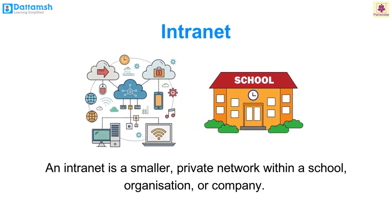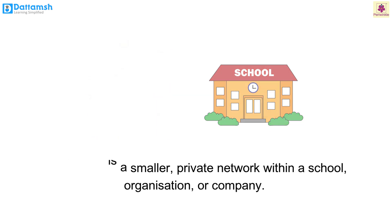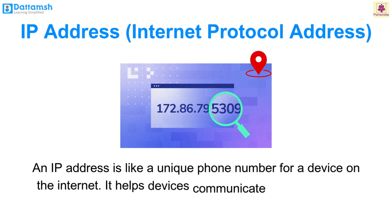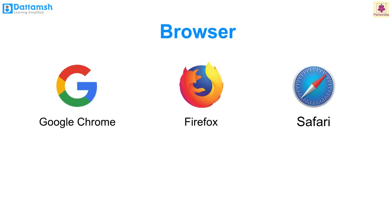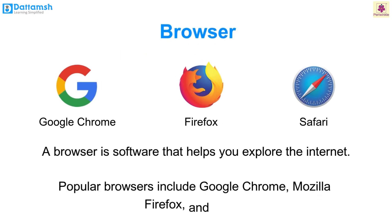An intranet is a smaller, private network within a school, organization or company. An IP address, or Internet Protocol address, is like a unique phone number for a device on the internet — it helps devices communicate with each other. A browser is the software that helps you explore the internet. Popular browsers include Google Chrome, Mozilla Firefox and Safari.